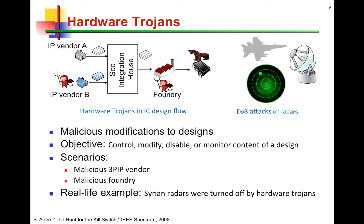Has this ever happened? While there is no real proof of hardware Trojans, there have been many anecdotal evidences. One particular case about a decade ago involved a country that sent missiles to attack another country — during the attack, the radar system was shut down so the missiles struck their target. This was attributed to hardware Trojans, because the country with the radar system had not produced it themselves but obtained it from other countries.